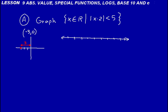Think about what would make the absolute value of x minus 2 greater than 5. If we put an 8 in there for x, we'd have 8 minus 2 is 6. 6 is not less than 5. 7 minus 2 would be equal to 5. So right at 7, we could put an open circle, because that means we're not including 7.